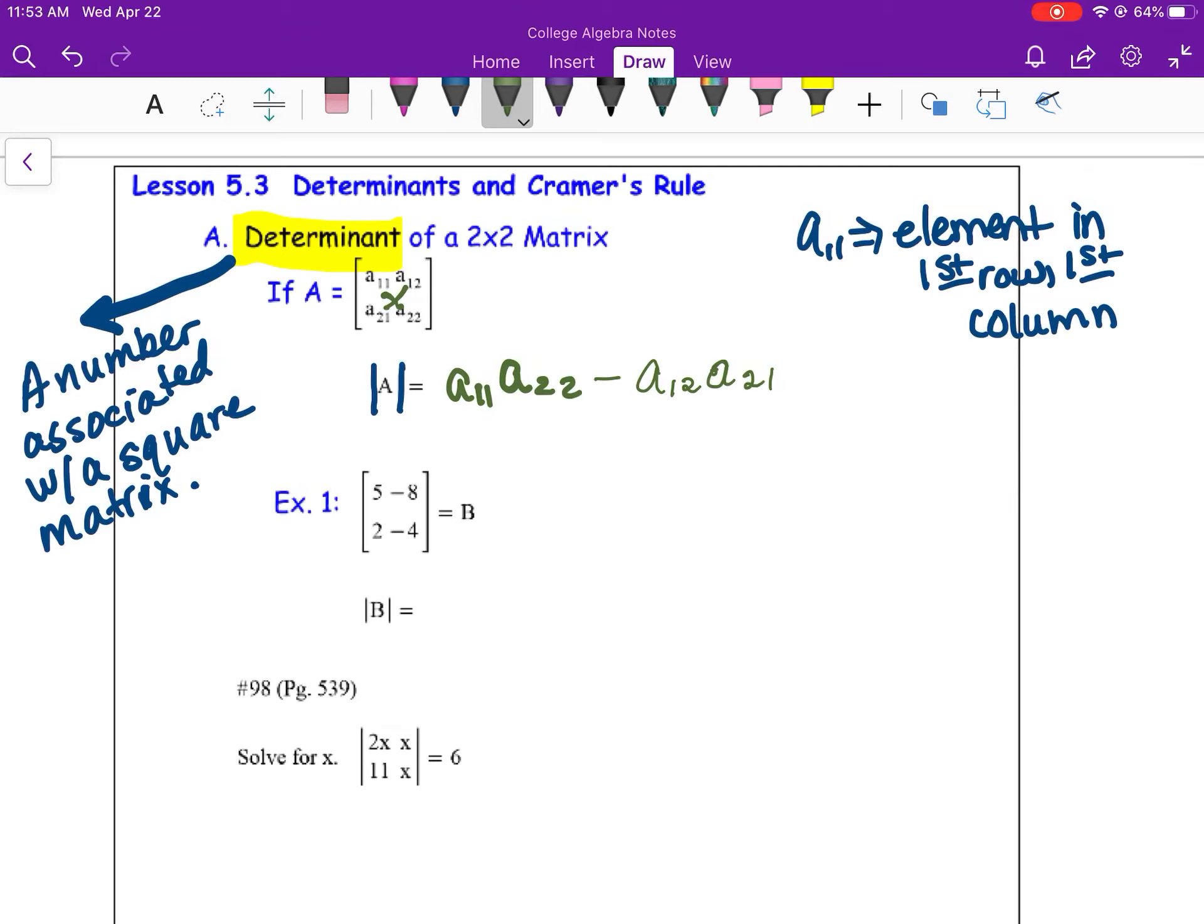So if I were to do example 1, which is matrix B, I would take 5 times negative 4, and I would subtract negative 8 times 2, and negative 20 plus 16 is going to be negative 4.